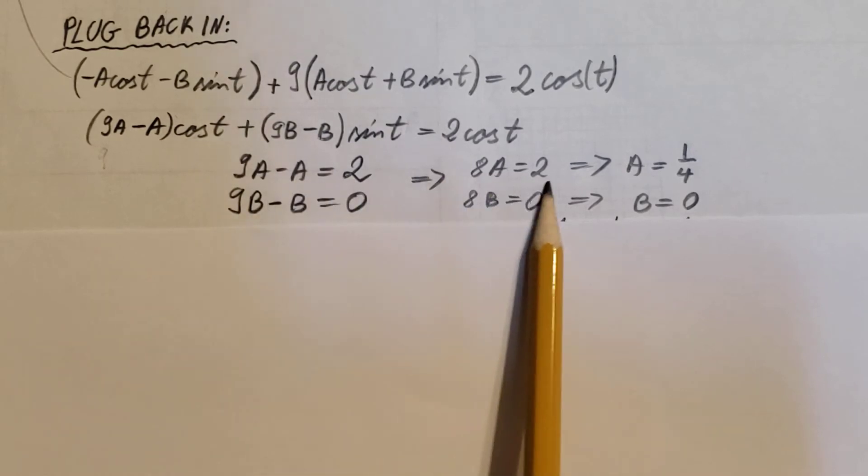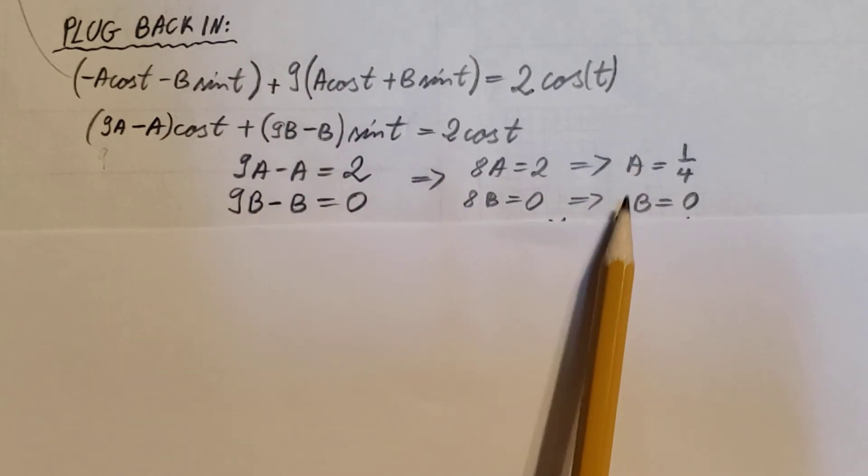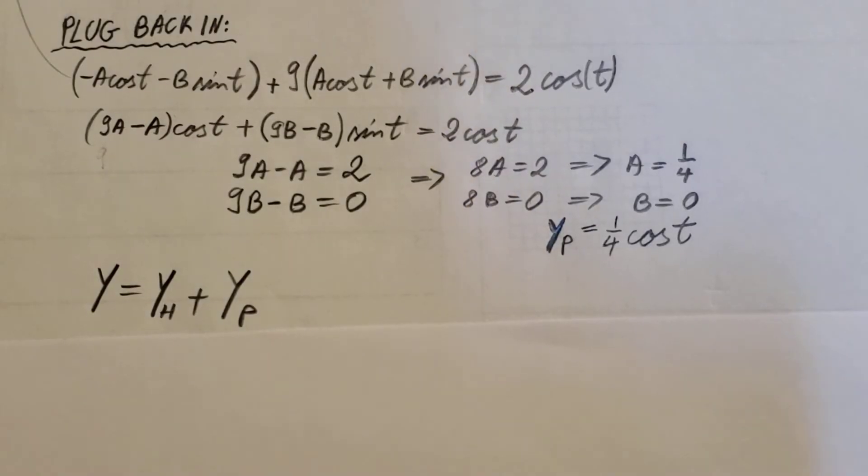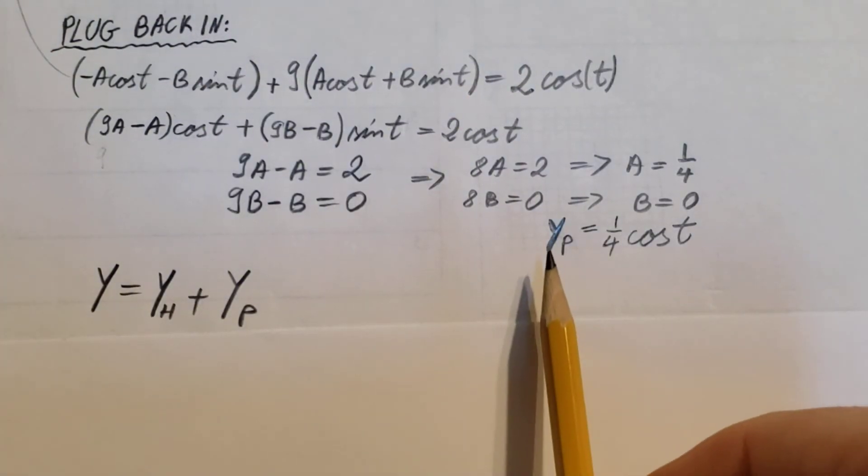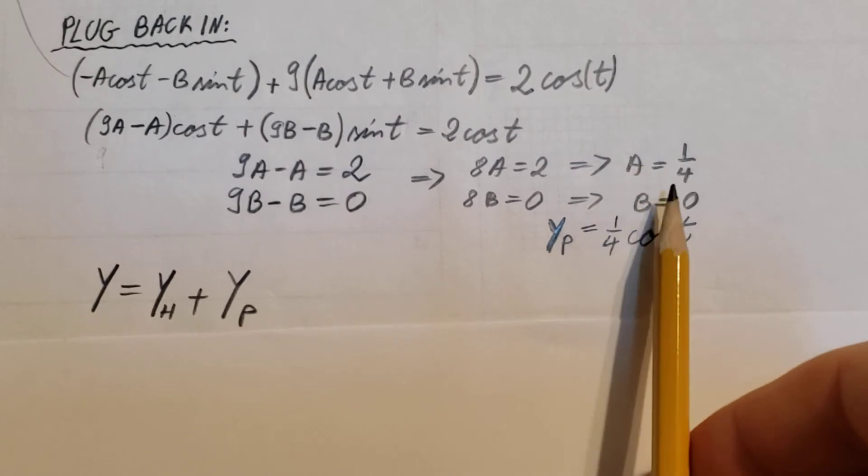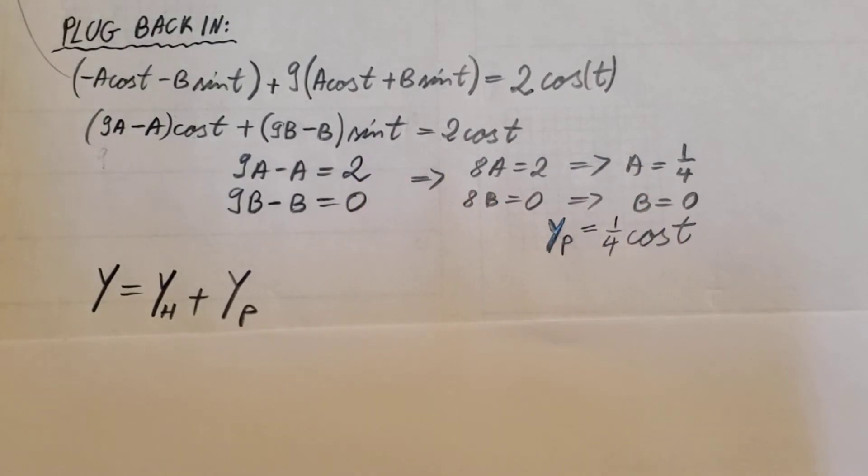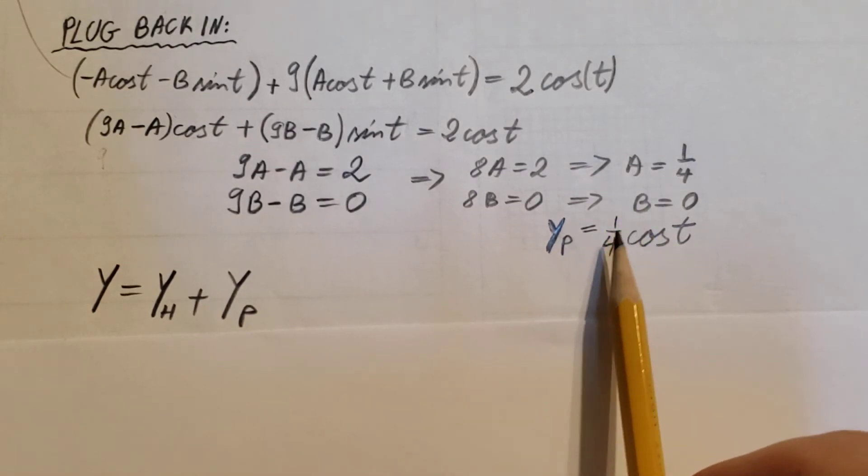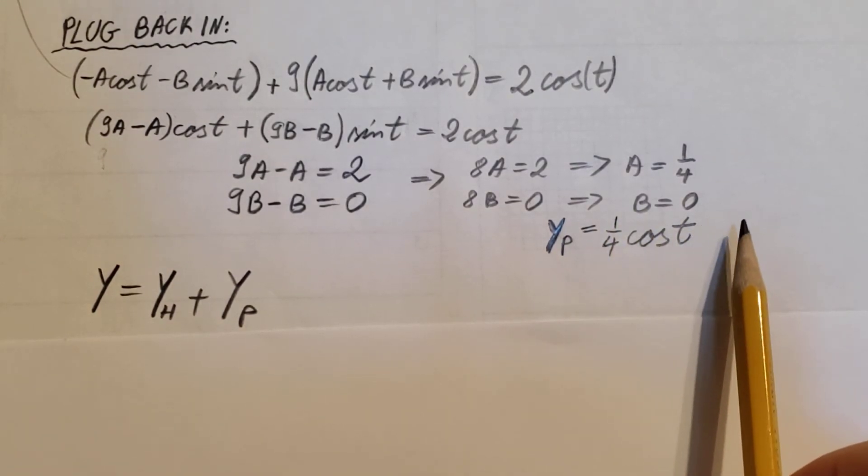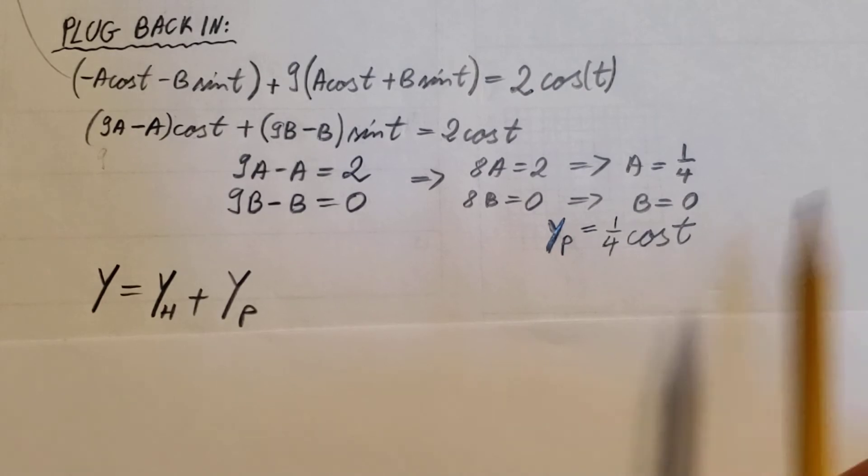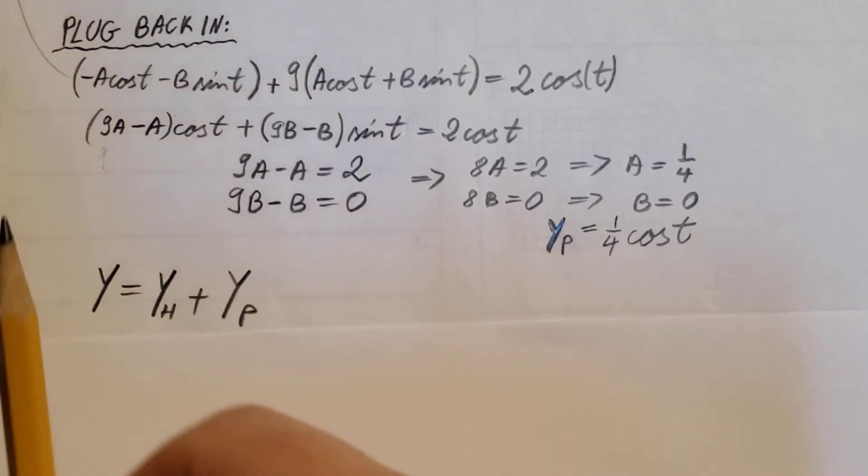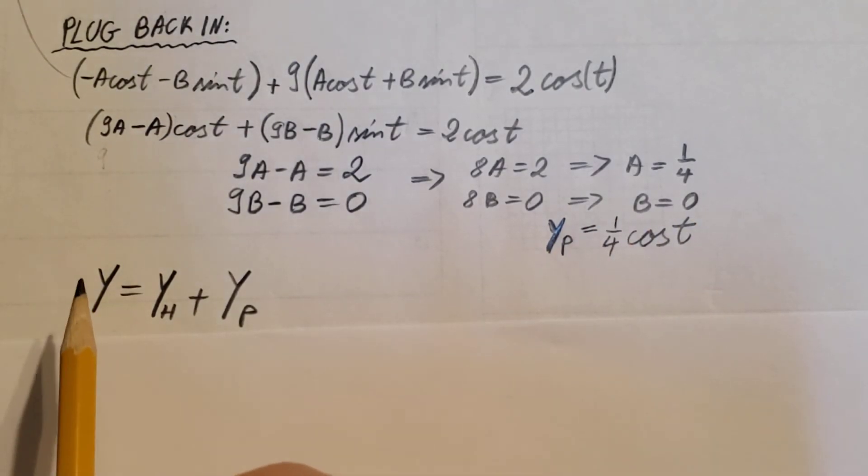From these two we can find our a and b. A is one-fourth, b is zero. Here is our particular solution: we take these two, plug it back into our yp that we guessed, and we get one-fourth cosine t plus zero times sine t.